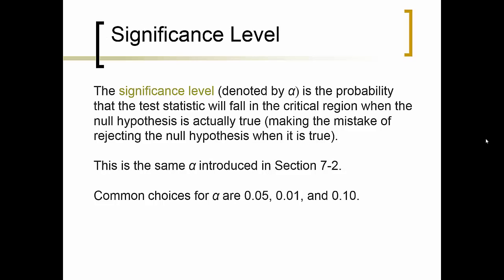The significance level, denoted by alpha, is the probability that a test statistic will fall in the critical region when the null hypothesis is actually true, making the mistake of rejecting the null hypothesis when it is true. This is the same alpha introduced in section 7-2 when we studied confidence interval estimates. Common choices for alpha are .05, .01, and .10.